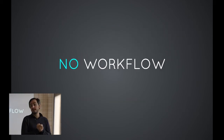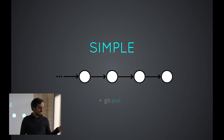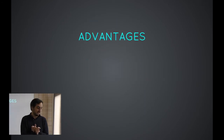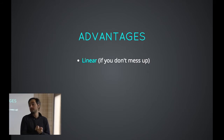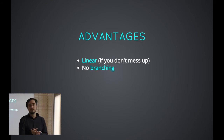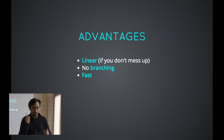The first workflow you can have with Git is no workflow. It's really simple — it's git pull, git push, and that's it. What are the advantages to this workflow? It's completely linear if you don't mess up the history. No branching, so it's as simple as simple. And it's really fast to use because you don't have any overhead. You just git pull, git push, etc.